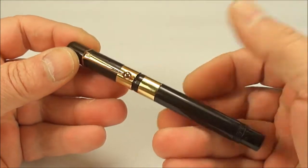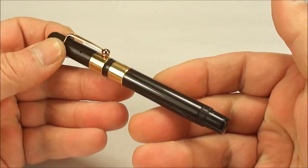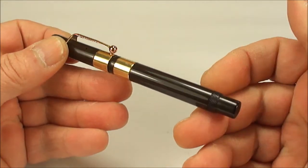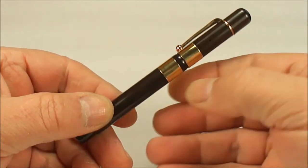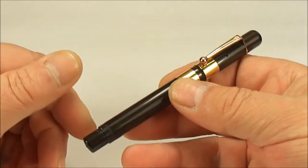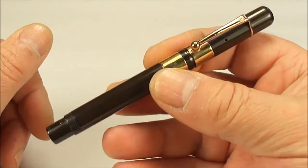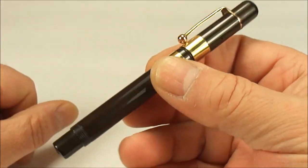We've replaced the washer inside, the plunger washer, we've put new cork washers in the pen, we've totally cleaned it internally, the feed, the nib, etc. So as we'll see in a moment, it's in full working order.